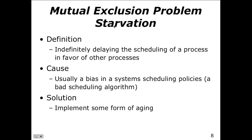No process should wait forever before entering the critical section. In terms of starvation, this is one of the classic mutual exclusion problems. Starvation occurs when one process is indefinitely delaying another process from executing — the other process just never gets a chance to run.